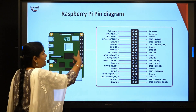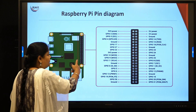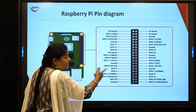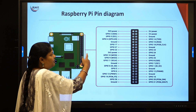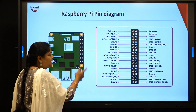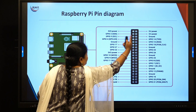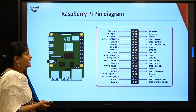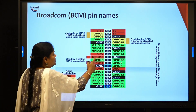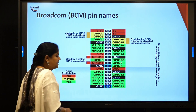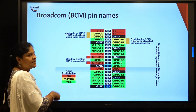The GPIO pin diagram shows all 40 pins of the Raspberry Pi — for example, pin 1 is a power pin, pin 2 is a 5V power pin, and so on. This configuration must be remembered if you are using BCM. If using BOARD, you can refer to pins as 1, 2, 3, 4 sequentially. There are separate diagrams for BOARD pin numbers and BCM pin names.